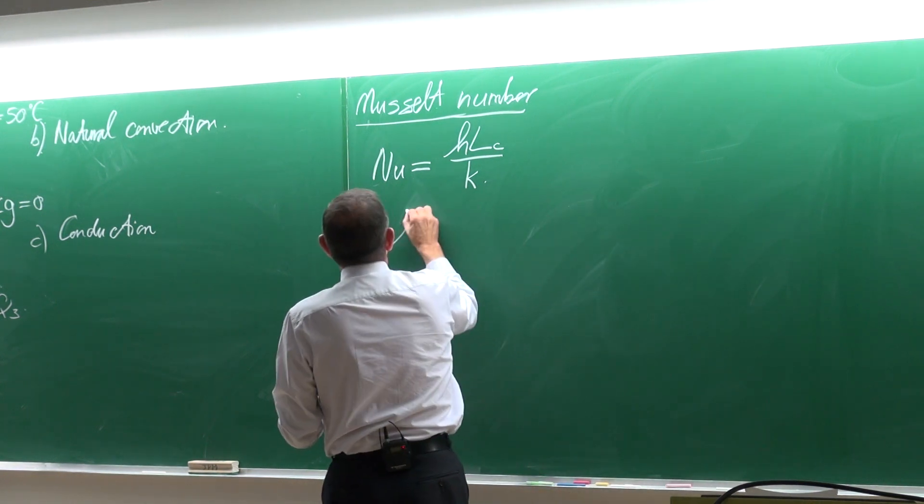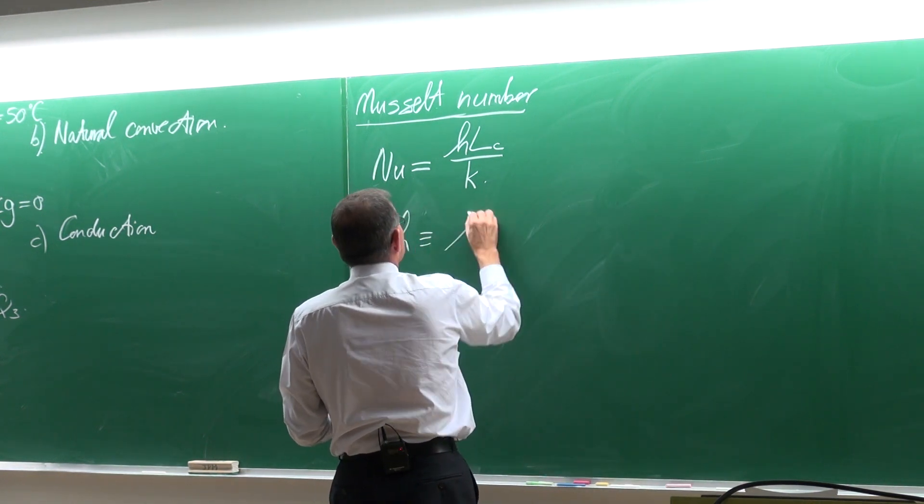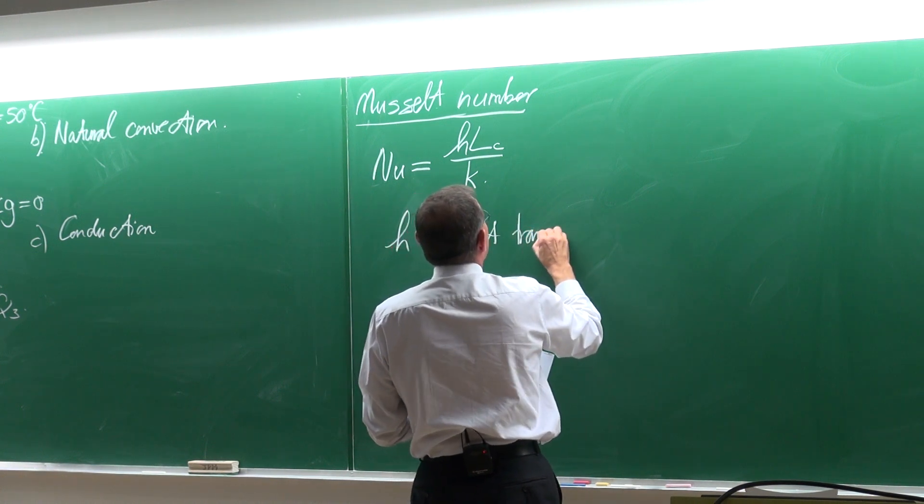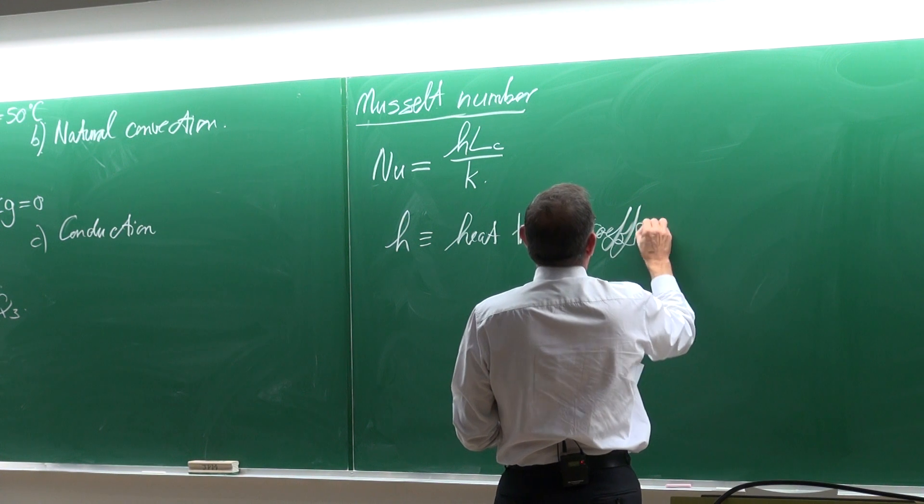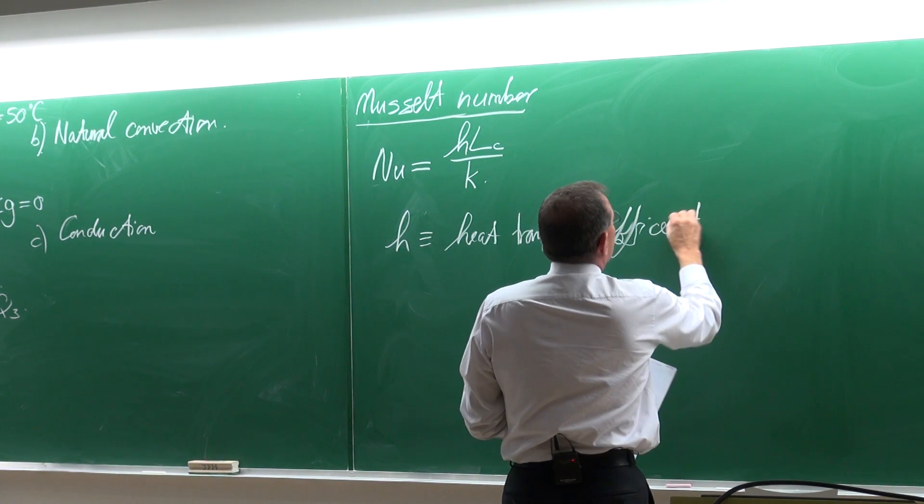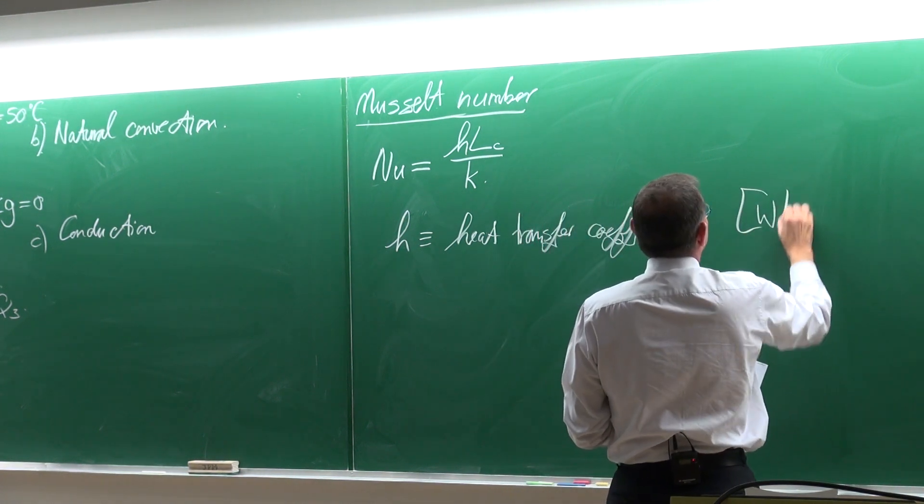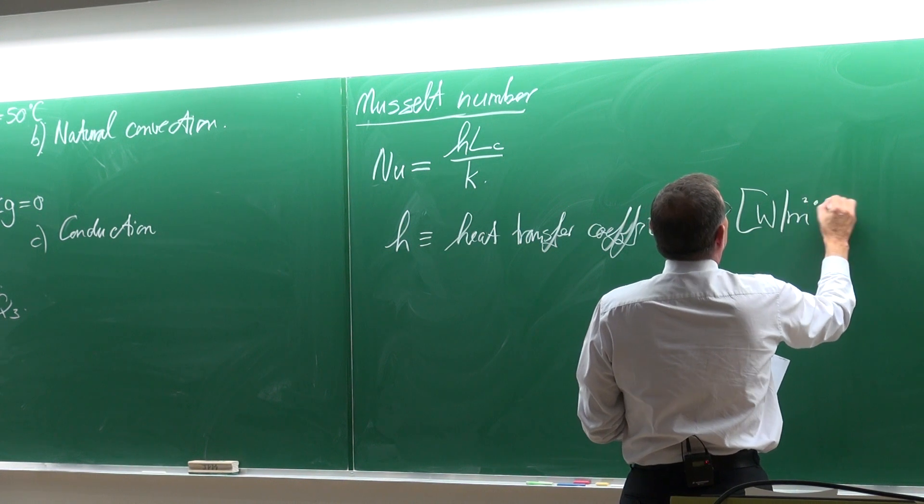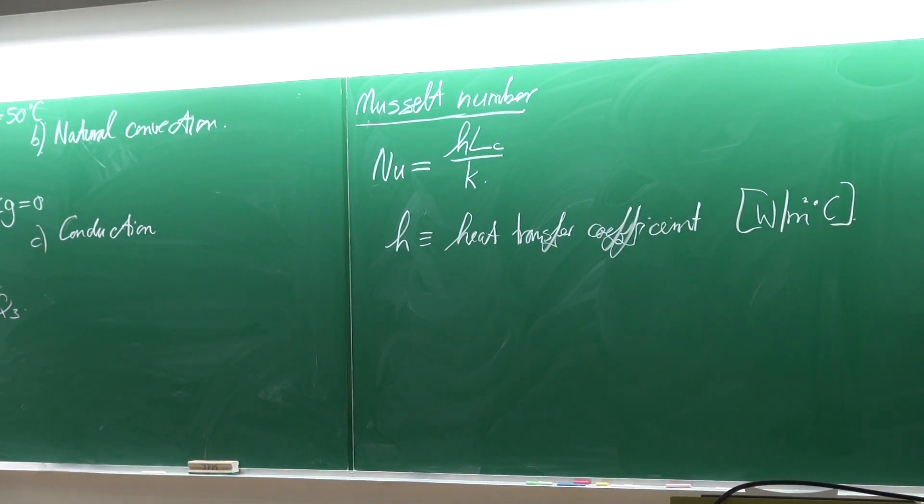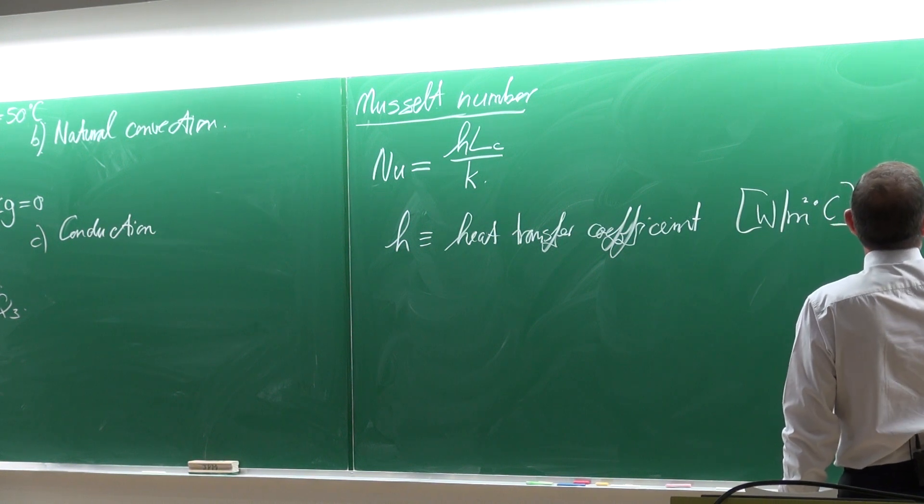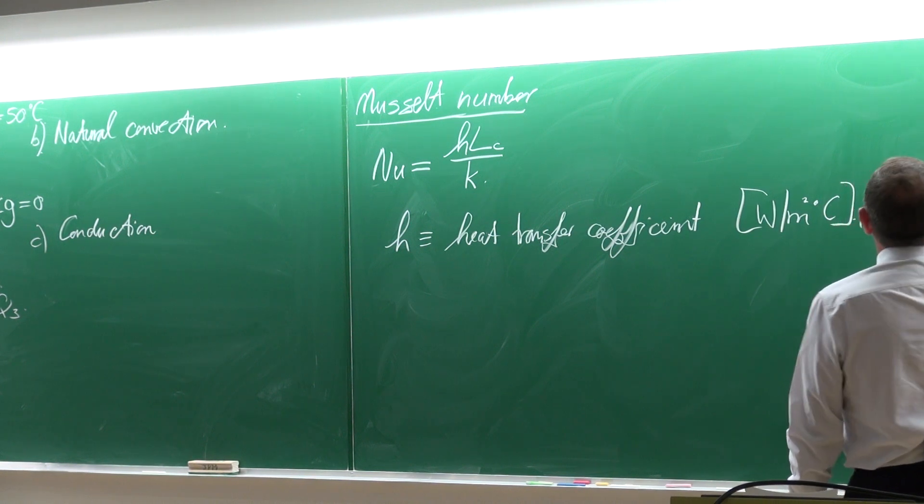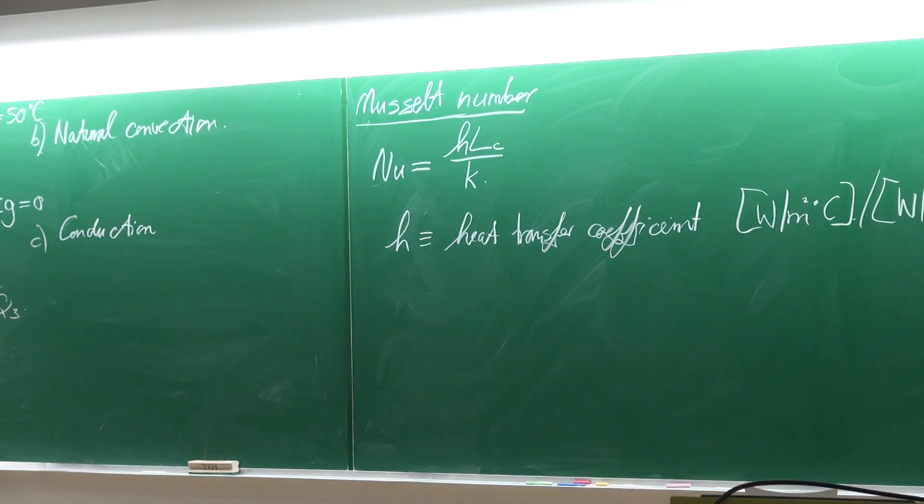Where H is known as the heat transfer coefficient and its units is watts per square meter. Take note it can be degrees Celsius or it can be watts per square meter Kelvin. Why?